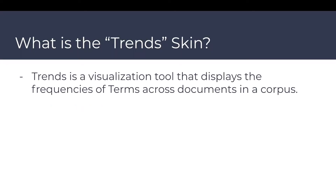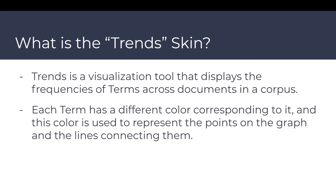Trends is a visualization tool that displays the frequencies of terms across documents in the corpus. Term frequency is displayed on customizable graphs with various options for your choice of presentation. Each term has a different color corresponding to it, and this color is used to represent the points on the graph and the lines connecting them.